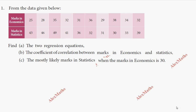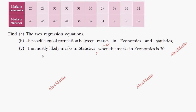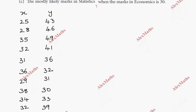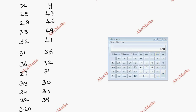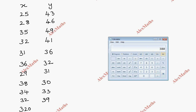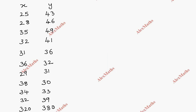Hi students, this is Alex here. Question number one in economics marks and statistics, first subdivision A: two regression equations. We have x and y values in a table. The total of x is 320 and the total of y, adding 43 plus 46 plus 49, gives a total of 380. There are 10 data points.